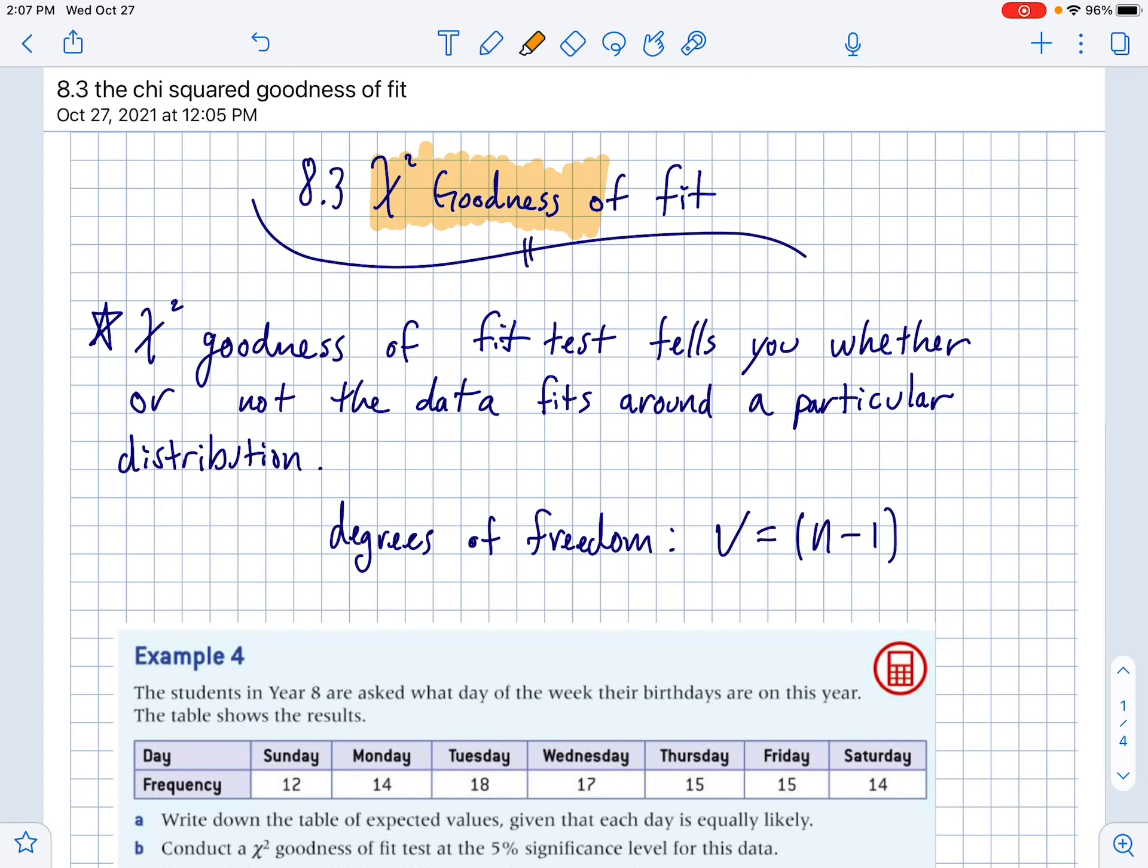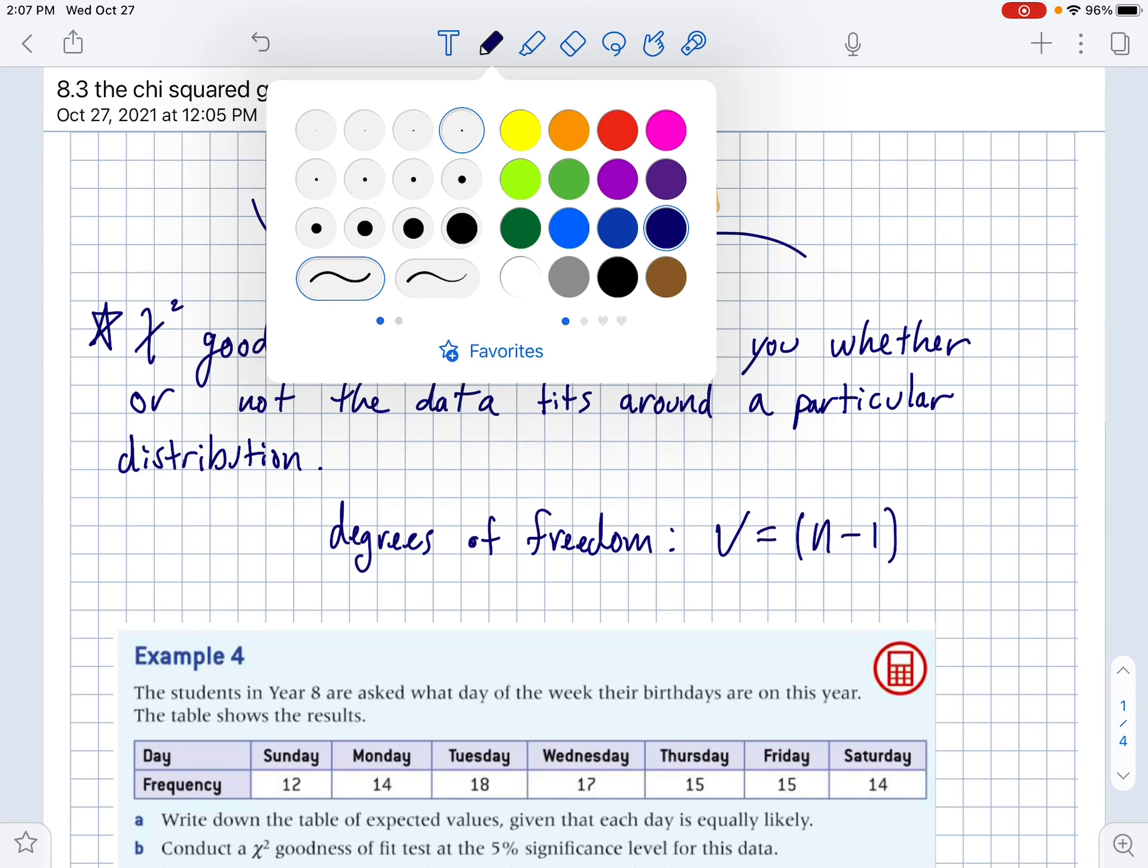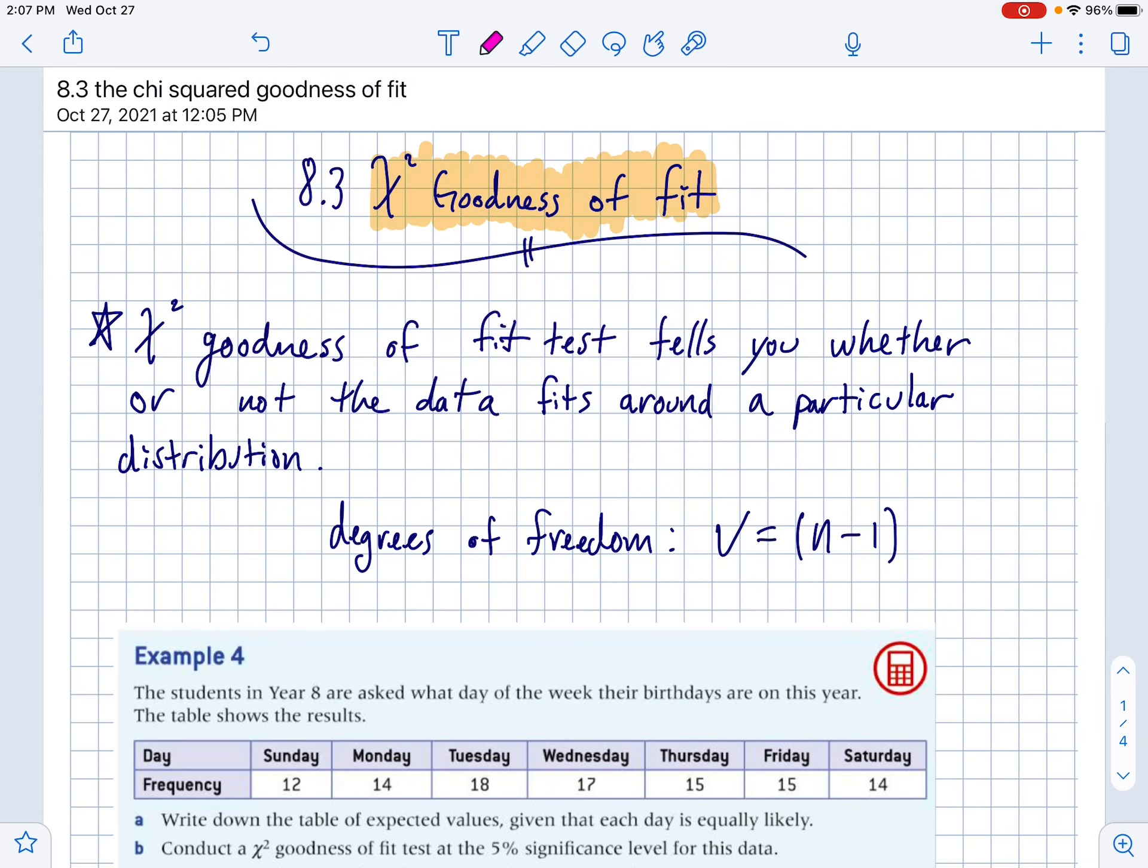All right, IBAISL2, today we're going to tackle 8.3, which is talking about the chi-squared goodness of fit test. It's a little bit different than a straight-up chi-squared independence test. The chi-squared goodness of fit test tells you whether or not the data fits around a particular distribution.